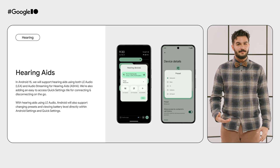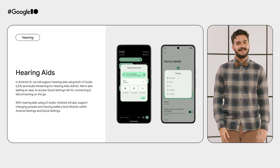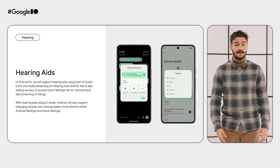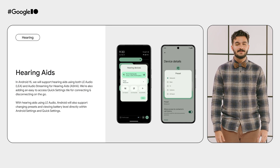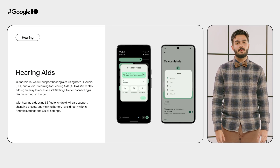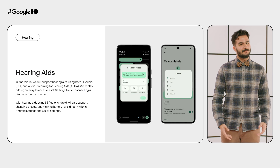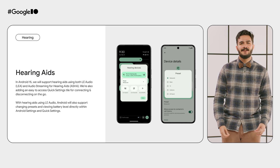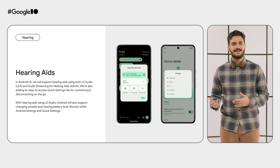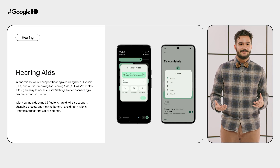First up, we have updates for hearing aids. In Android 15, you can now pair and control your LE Audio hearing aids with added support for hands-free calling, changing presets, viewing battery levels, and a new Quick Settings tile. This new tile will also work with ASHA hearing aids, offering an easy way to connect and disconnect your hearing aids.